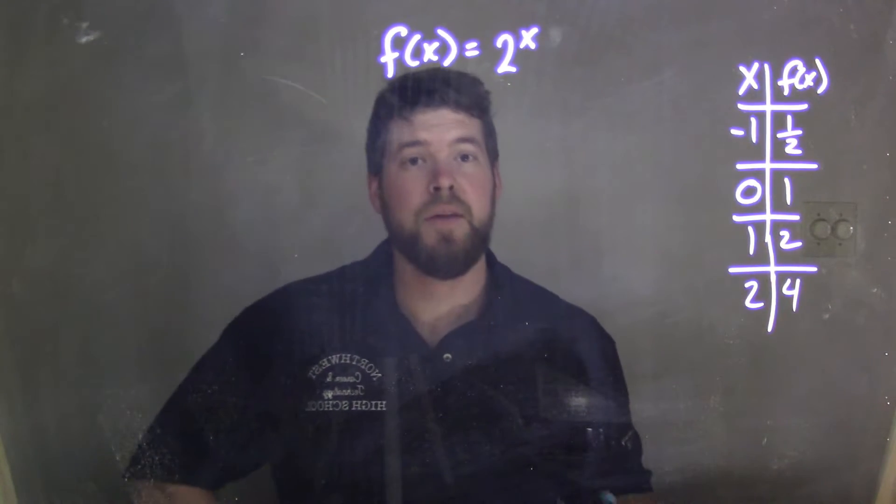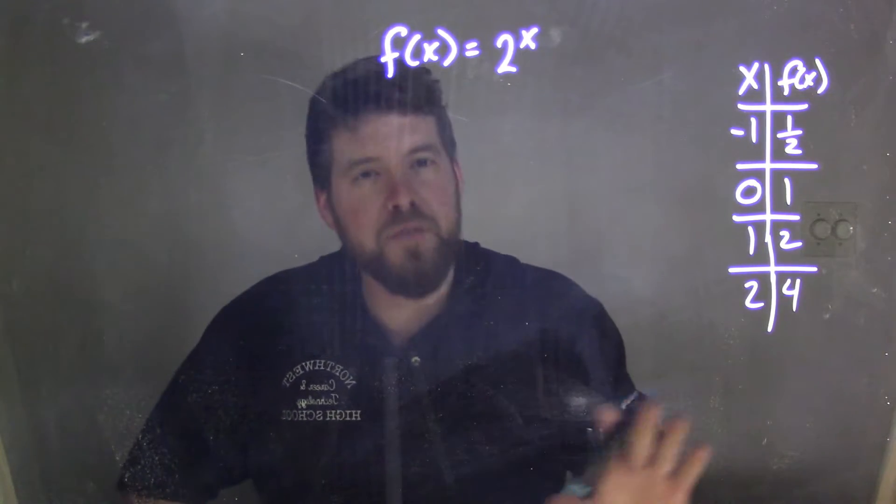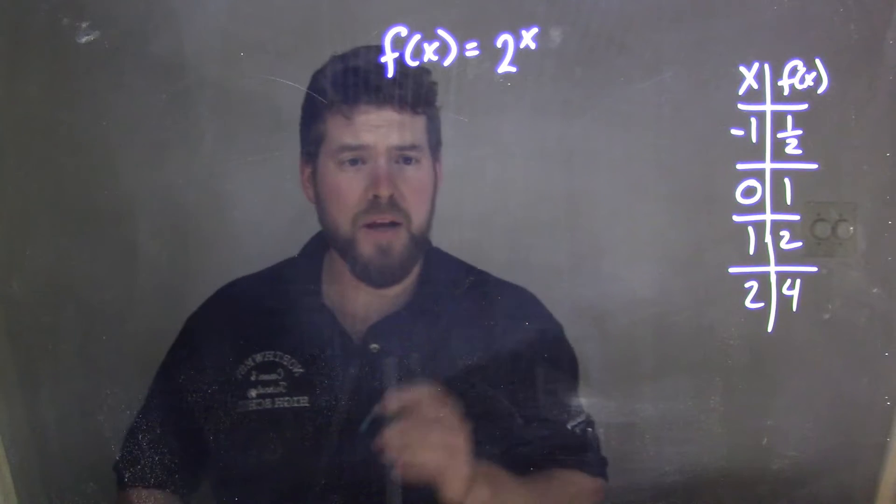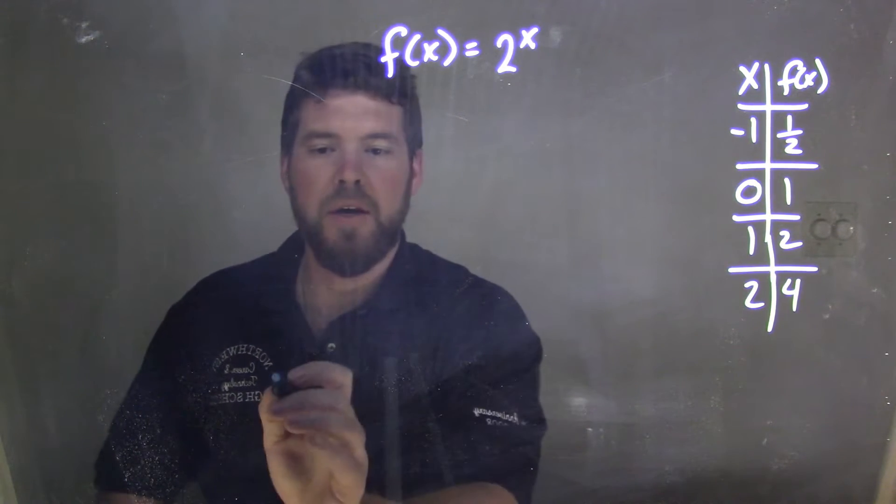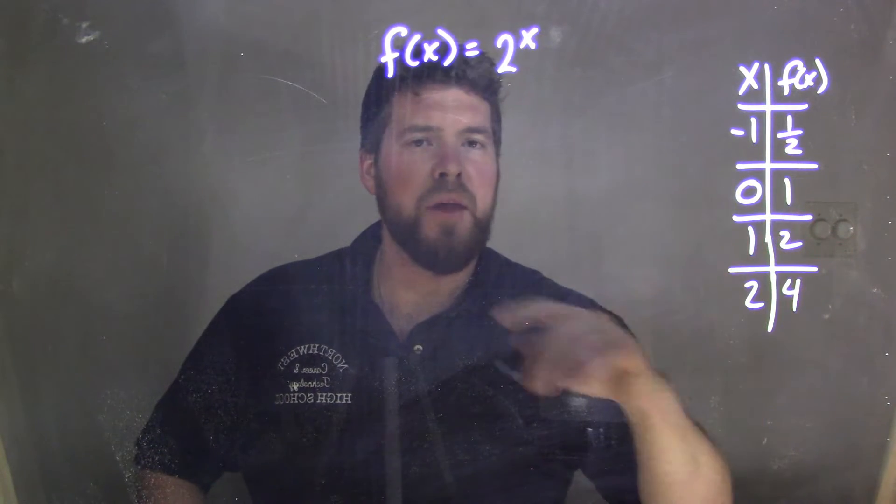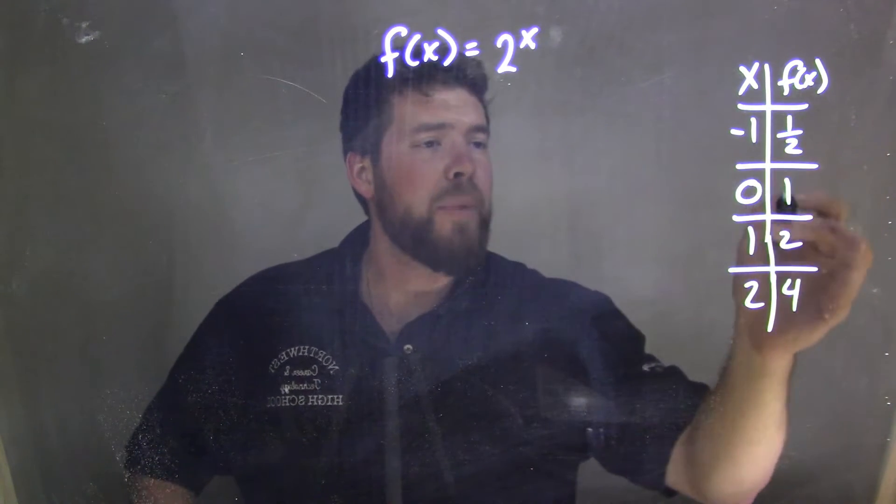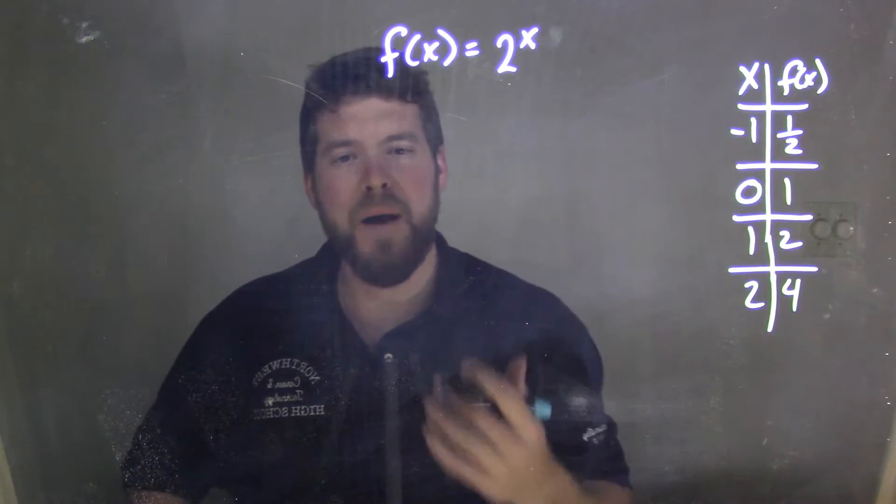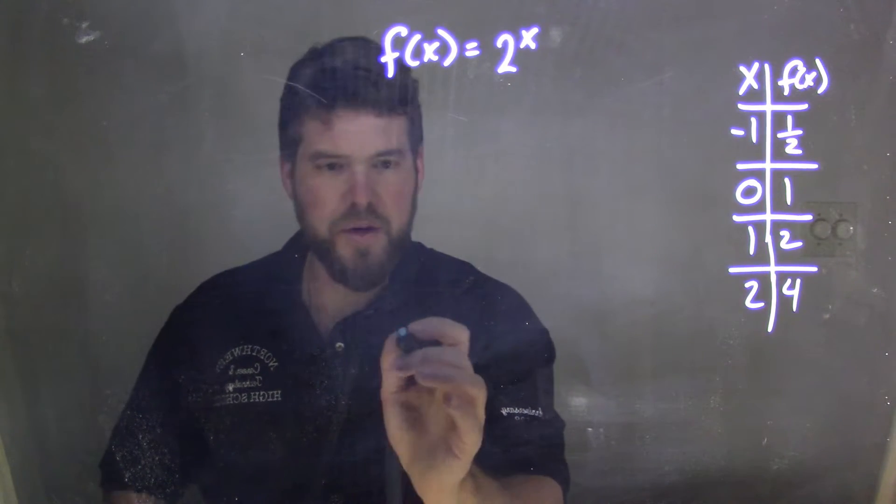So I should have enough data points now to have a good gist of what this graph is doing. Where is it going? So I want to graph this out with my axes here. We notice all of our f of x values or the y-axis, they're all positive numbers. And that's one thing that's true about this equation.